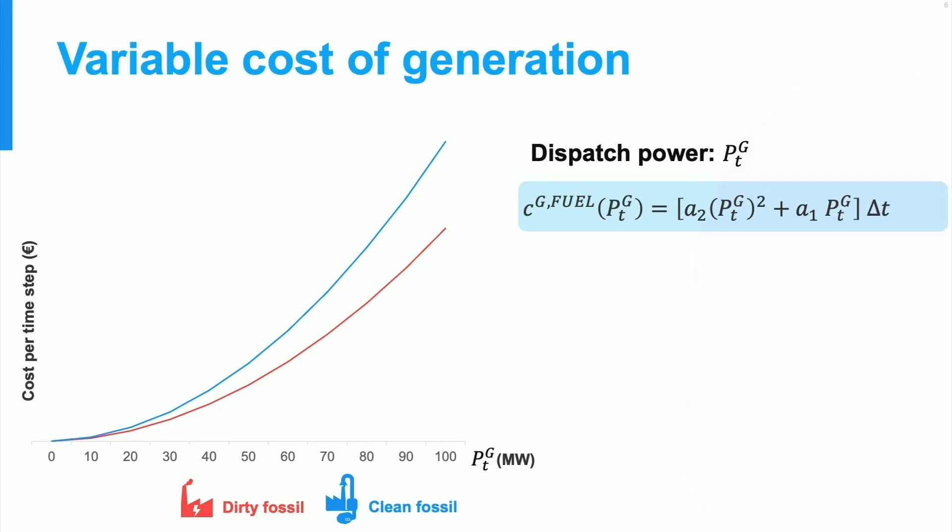The clean fossil plant has a similar curve, but at a higher cost. And as we mentioned before, renewable energy sources come in at zero cost. All three curves can be made using the same basic model, but with a different choice of parameters.